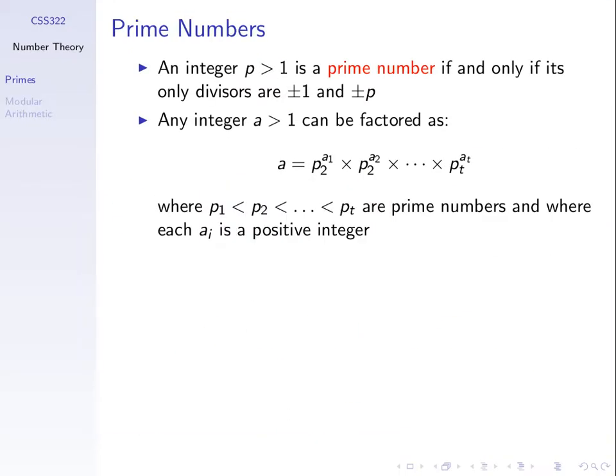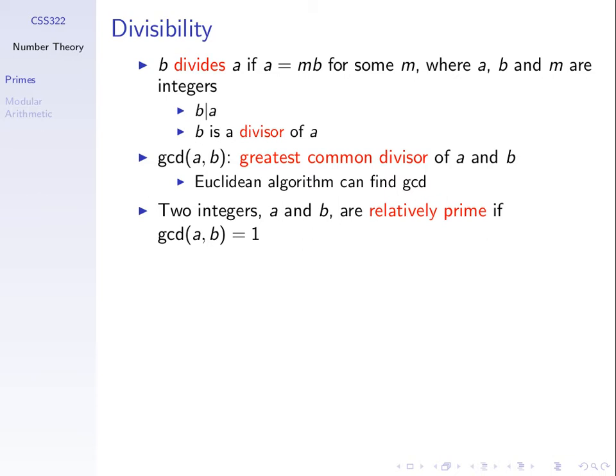So, simple stuff so far. We have prime numbers, divisors, greatest common divisor, and the only new concept is that two integers are relatively prime if their greatest common divisor is 1.